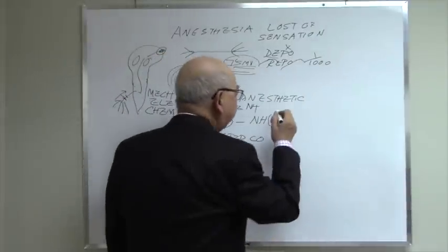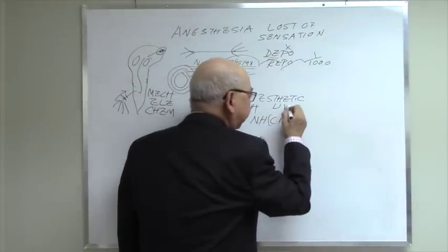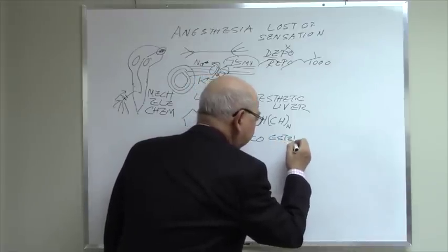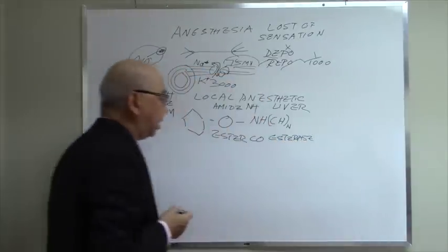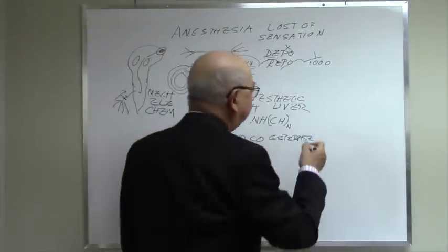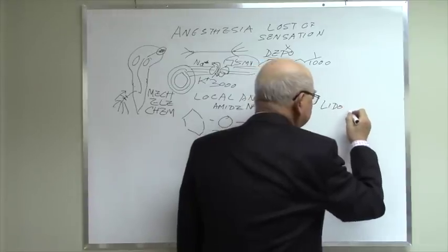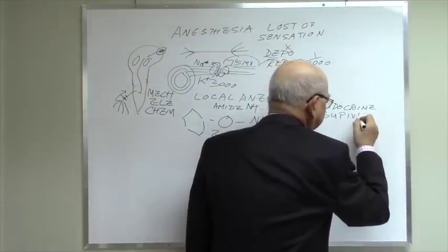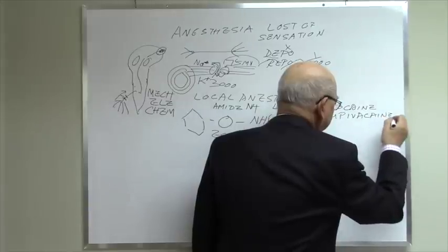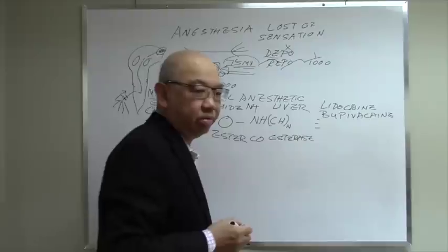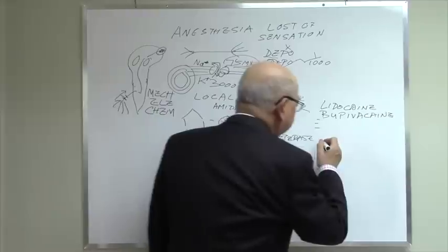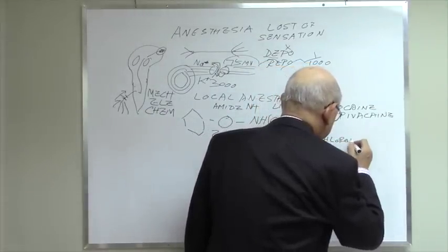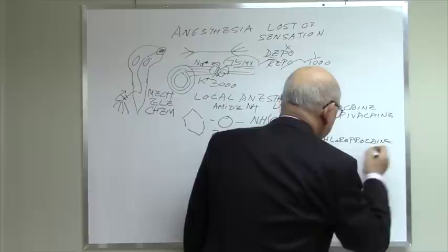Amide local anesthetics are metabolized by the liver. Ester local anesthetics are metabolized by esterases. Among amide local anesthetics, we have lidocaine, and several other ones that are not very often used. Among ester local anesthetics, you have chloroprocaine and tetracaine.